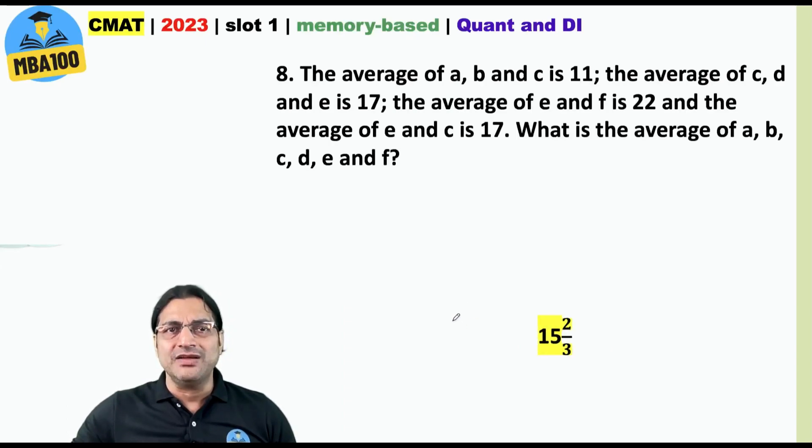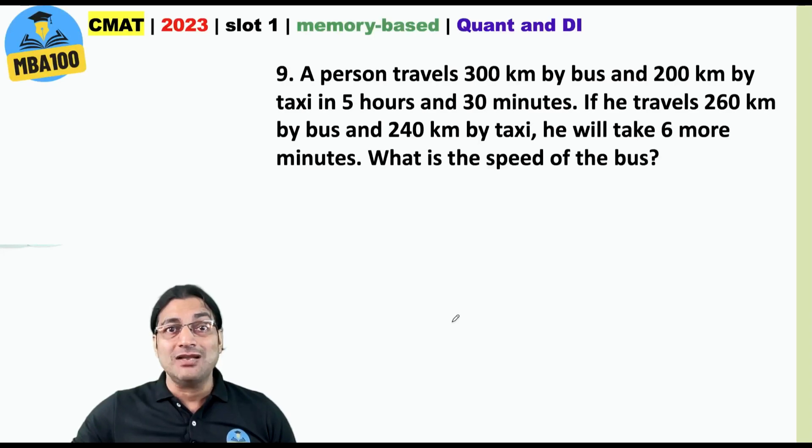What about this one? Simple. 15 2 by 3 was the answer. And this one? 100 km per hour.